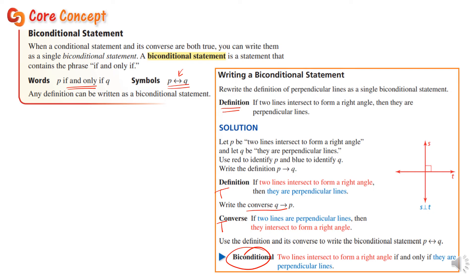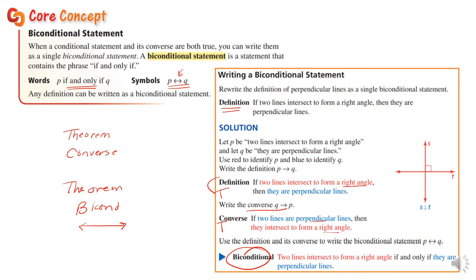Both things have to be true. Later on when we get theorems, there are a few theorems written as biconditionals — those are the ones you have to be careful with, because you can use them either way. You could say these are right angles, therefore they're perpendicular. Or you could say these are perpendicular, therefore they're right angles. You can go either way with a theorem if it's written in the if-and-only-if form.